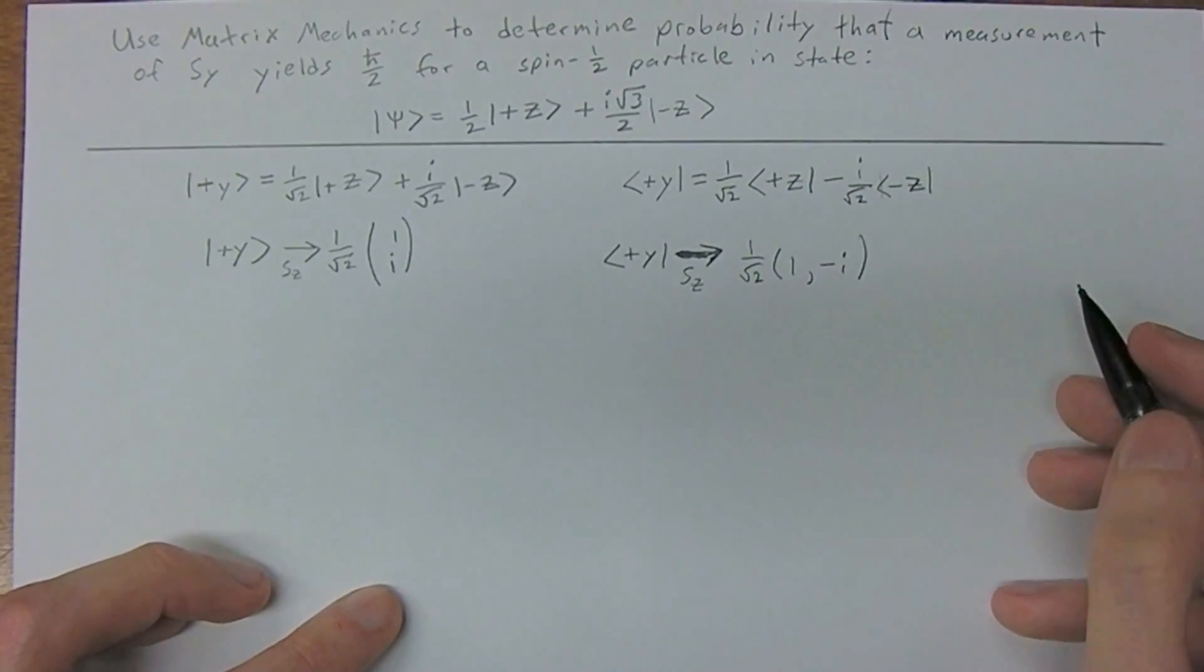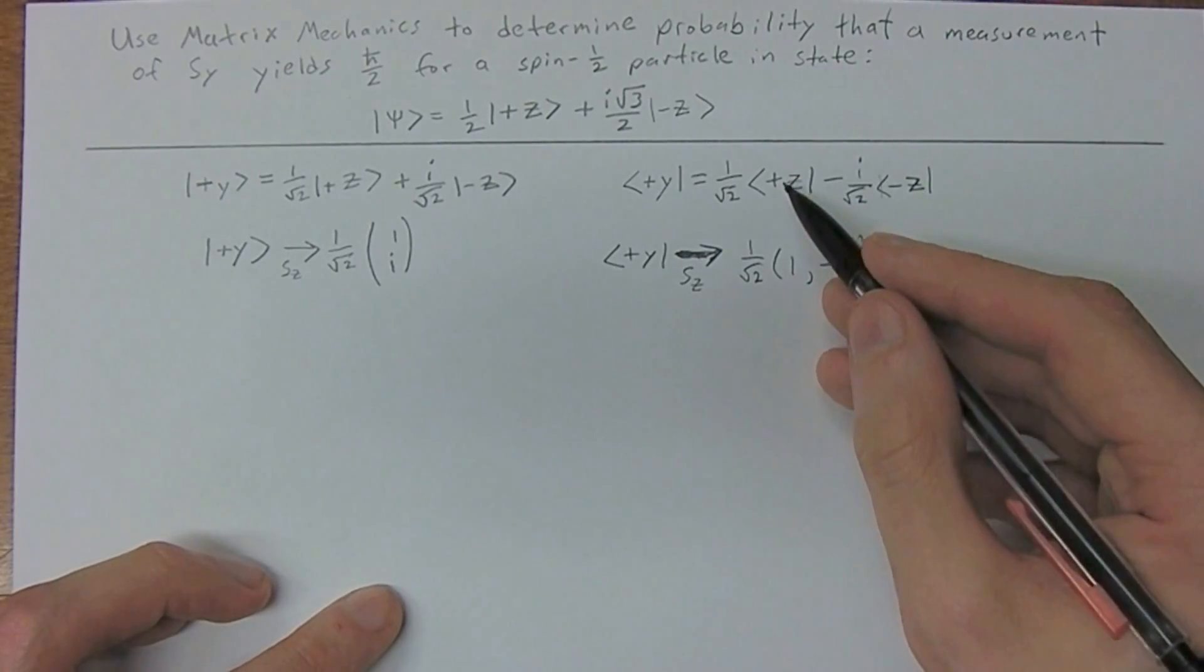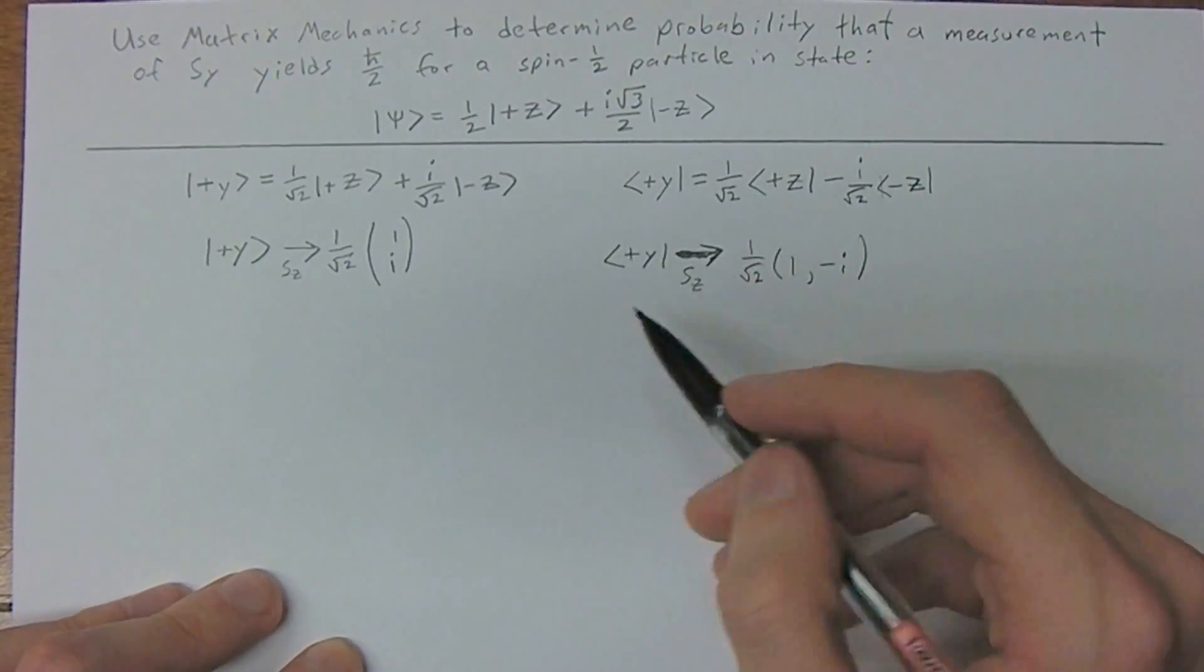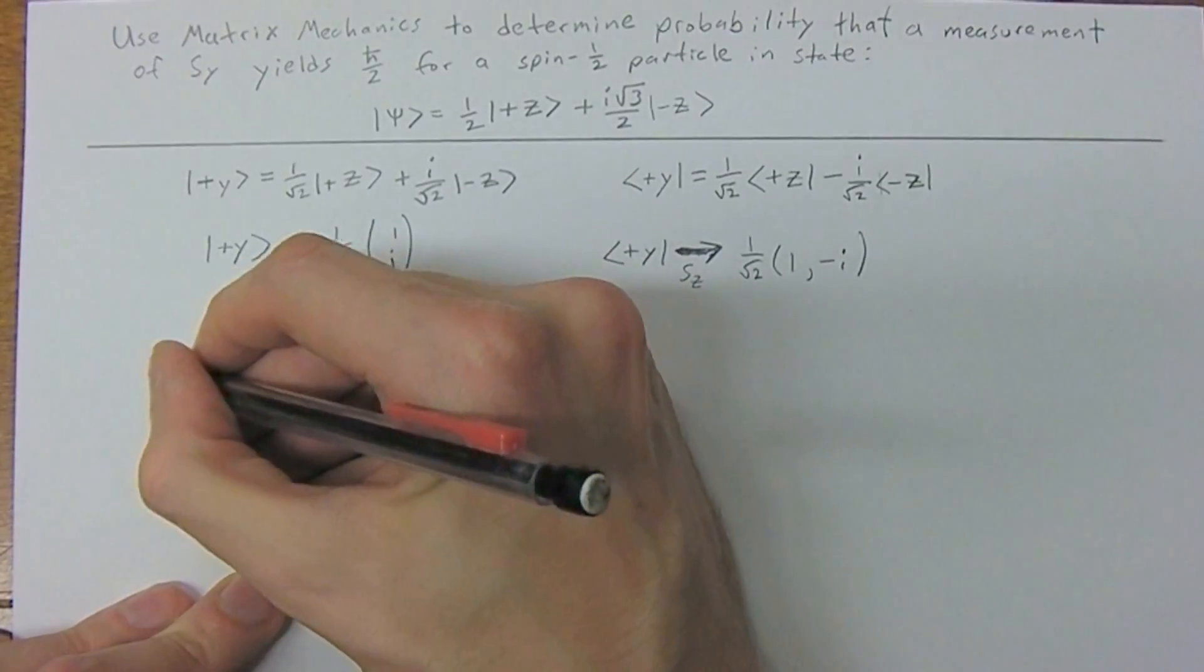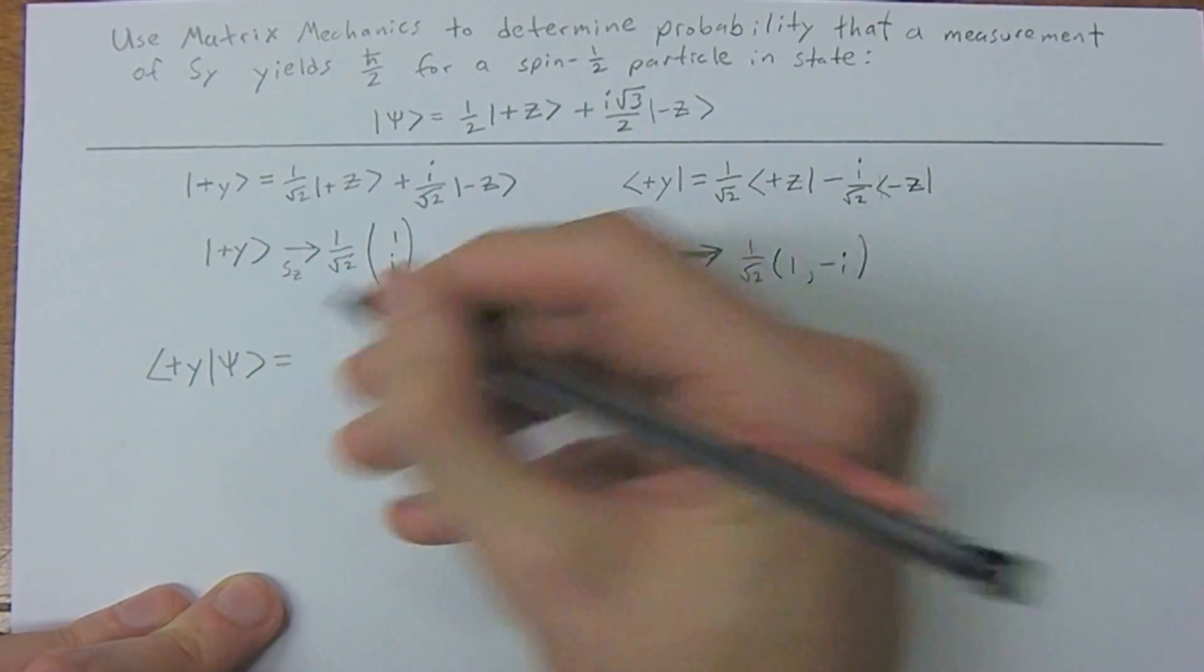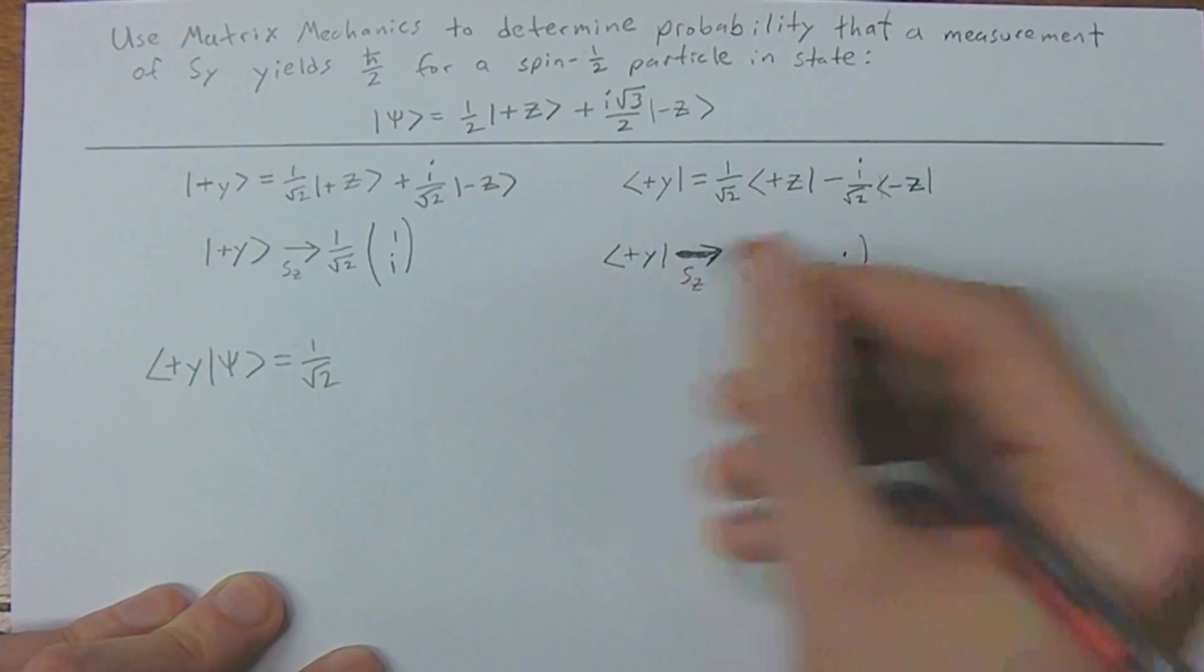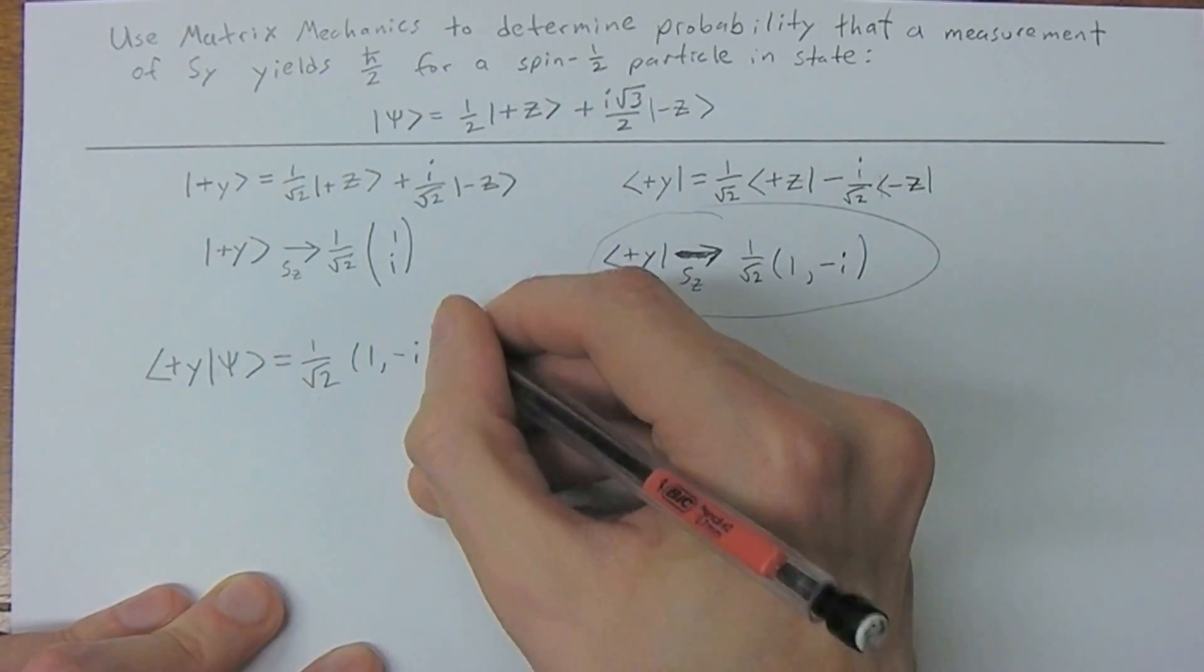So that's all we've done here. We've taken out the plus z and the negative z, and we just have that represented now in matrix form like this. So again, we want to act our plus y on our psi to get our probability amplitude. So plus y acting on psi, we're going to calculate our probability amplitude now. So this is going to be 1 over square root of 2, using this equation here, of 1 minus i.